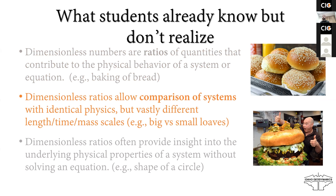Students also know, but don't realize, that dimensionless ratios can often provide insight into the underlying physical properties of a system without solving any equations. For example, the geometry of a circle — we know something intrinsic about that geometry when we know the value of pi.